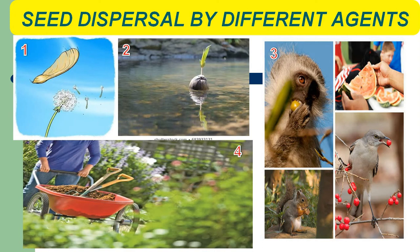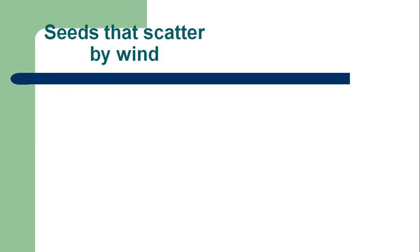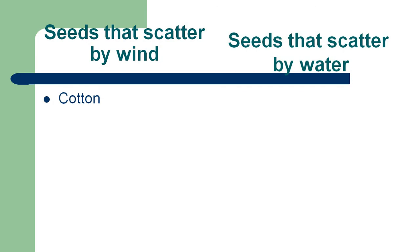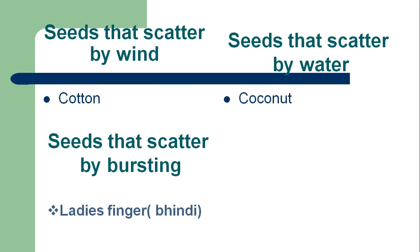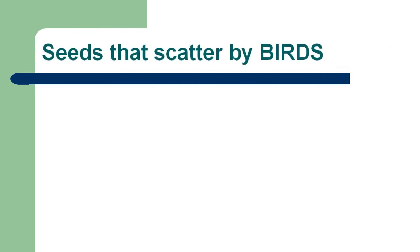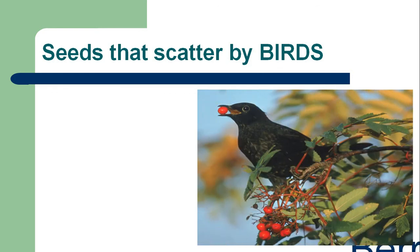Human beings, after eating fruits, throw the seeds on the ground. The gardener, who works in the garden, also spreads seeds in different places. Seeds that scatter by wind include cotton seeds. Seeds that scatter by water include coconut. Seeds that scatter by bursting include lady's finger or bhindi. Seeds that scatter by birds include berries.